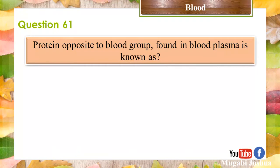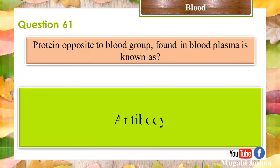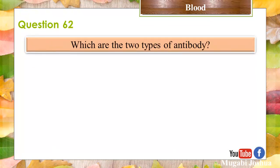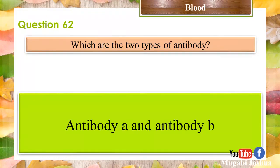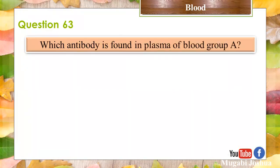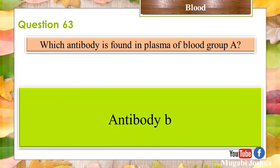Question 61: The protein opposite to blood group found in blood plasma is known as? Antibody. Question 62: Which are the two types of antibody? Antibody A and Antibody B. Question 63: Which antibody is found in the plasma of blood group A? Antibody B.